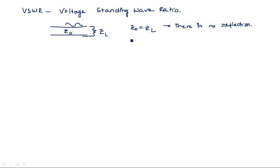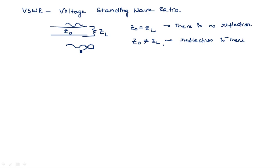When the signal touches the load, if the characteristic impedance of the transmission line equals the impedance of the load — that is, if Z0 equals ZL — then the signal will be absorbed by ZL and there is no reflection. But if Z0 is not equal to ZL, both are different, then the signal will be reflected back. This reflection is what creates the standing wave.